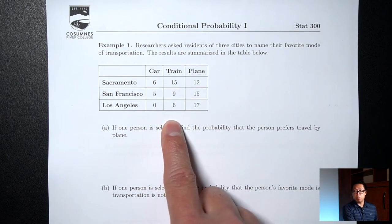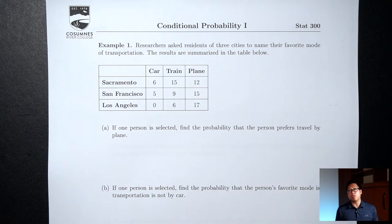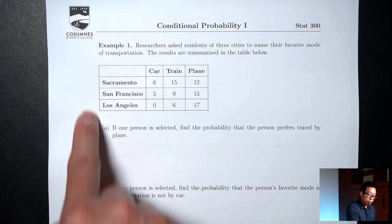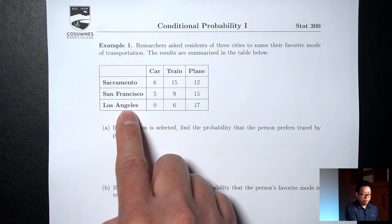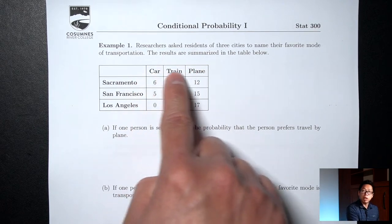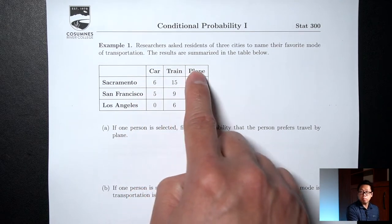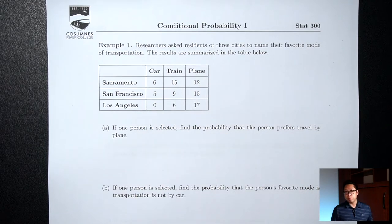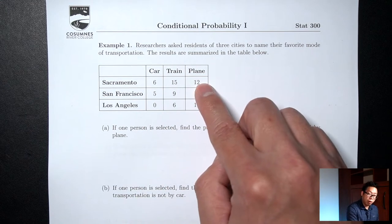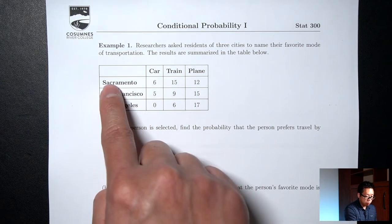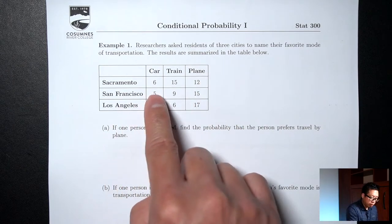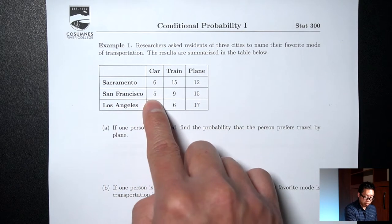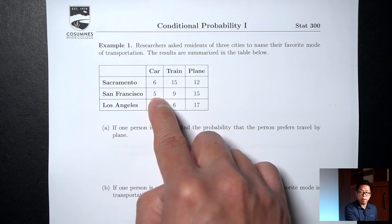What we have here is called a contingency table, or a two-way table. It's usually used in situations where we're collecting two pieces of data, and most of the time it's two pieces of qualitative data. Here, we're asking people what city do you live in — Sacramento, San Francisco, Los Angeles — and also what's your favorite mode of transportation: car, train, or plane. The numbers here are frequencies; they're counting how many people. For instance, this 12 means there are 12 people who are from Sacramento and at the same time said plane was their favorite mode of transportation. This 5 means there are 5 people from San Francisco who said car was their favorite.